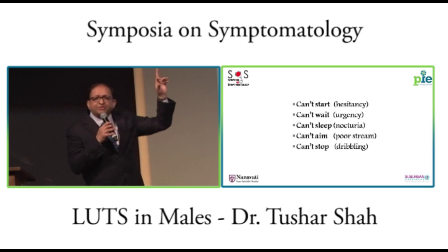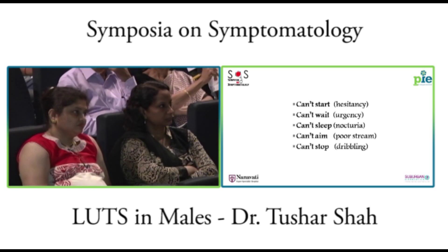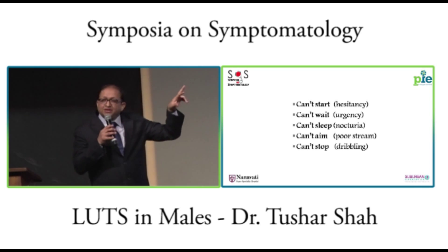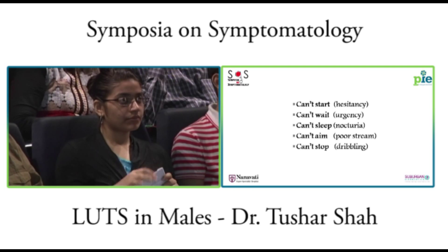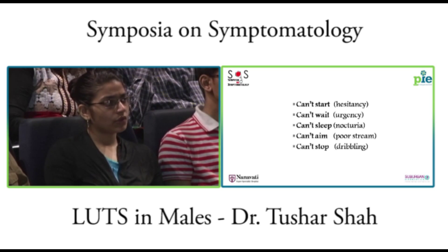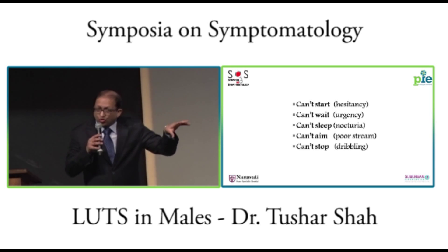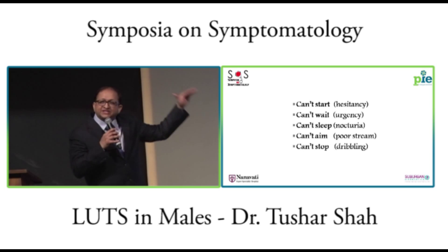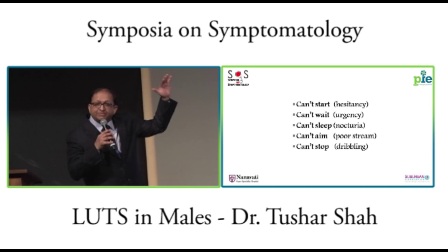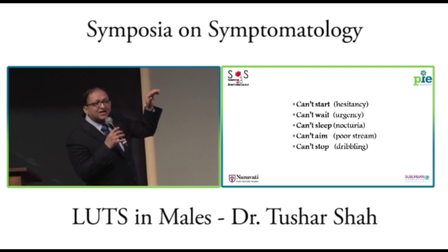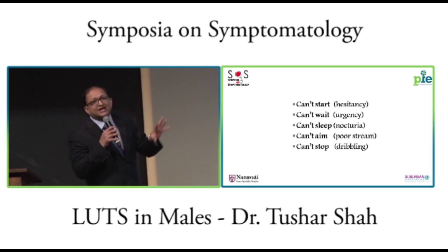Can't start — can it be overactive bladder? No. Can't wait — urgency — can it be overactive bladder? Yes. Can't sleep — nocturia, frequency — can it be overactive bladder? Yes. Can't aim — can it be overactive bladder? No. Can't stop — can it be overactive bladder? No. So all five are prostate symptoms of benign prostatic hypertrophy, but can't wait and can't sleep due to nocturia are the chief symptoms of overactive bladder.